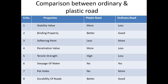Comparison between ordinary and plastic roads. Stability value: plastic roads are more stable than ordinary roads. Binding property: plastic roads have much better binding properties than ordinary roads. Softening point: lower in plastic roads, higher in ordinary roads. Penetration value: higher in plastic roads, lower in ordinary roads. Tensile strength: plastic roads have high tensile strength; ordinary roads have less.